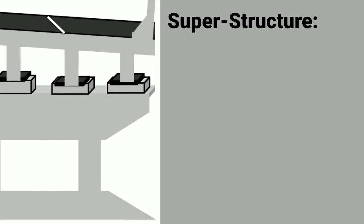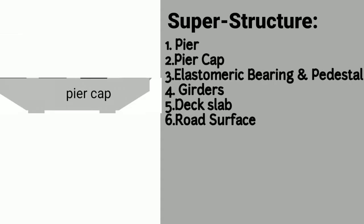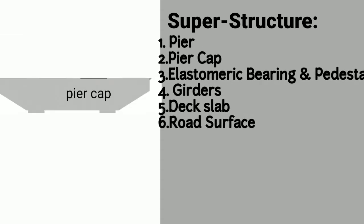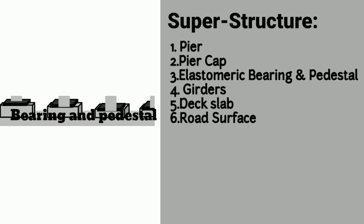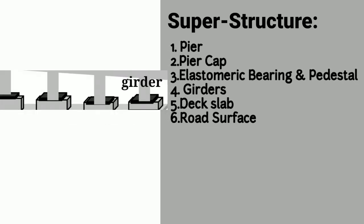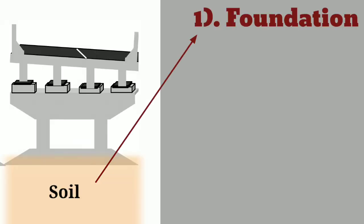In super-structure, there are different components of a PSC girder or RCC girder bridge, like pier, pier cap, bearing and pedestal, girders, deck slab, and road surfaces. These are the parts of super-structure.